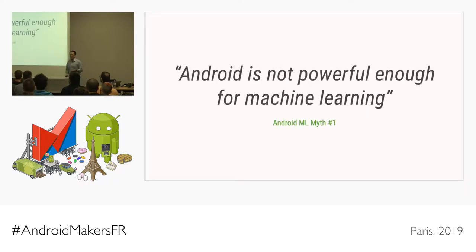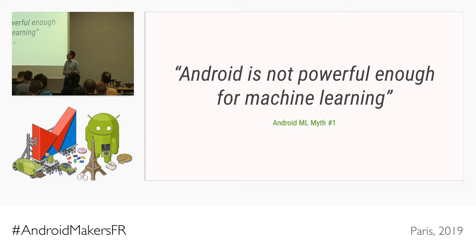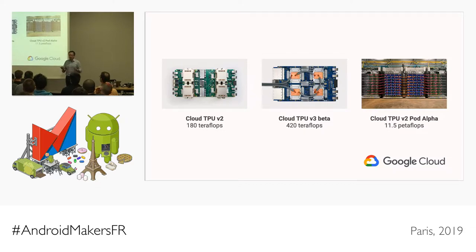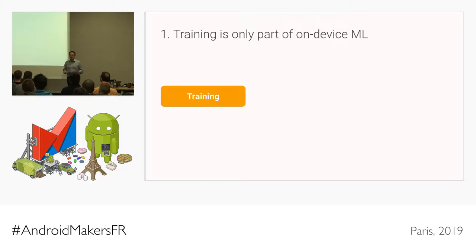The first myth is: Android is simply not powerful enough to run machine learning. It's a phone with a very limited battery — how can it possibly run machine learning? The whole industry presents machine learning as requiring gigaflops or petaflops of processing power. And yes, those have their place when you're training a model from scratch with millions of data points — my colleagues at Google Cloud would quite like you to use their product.